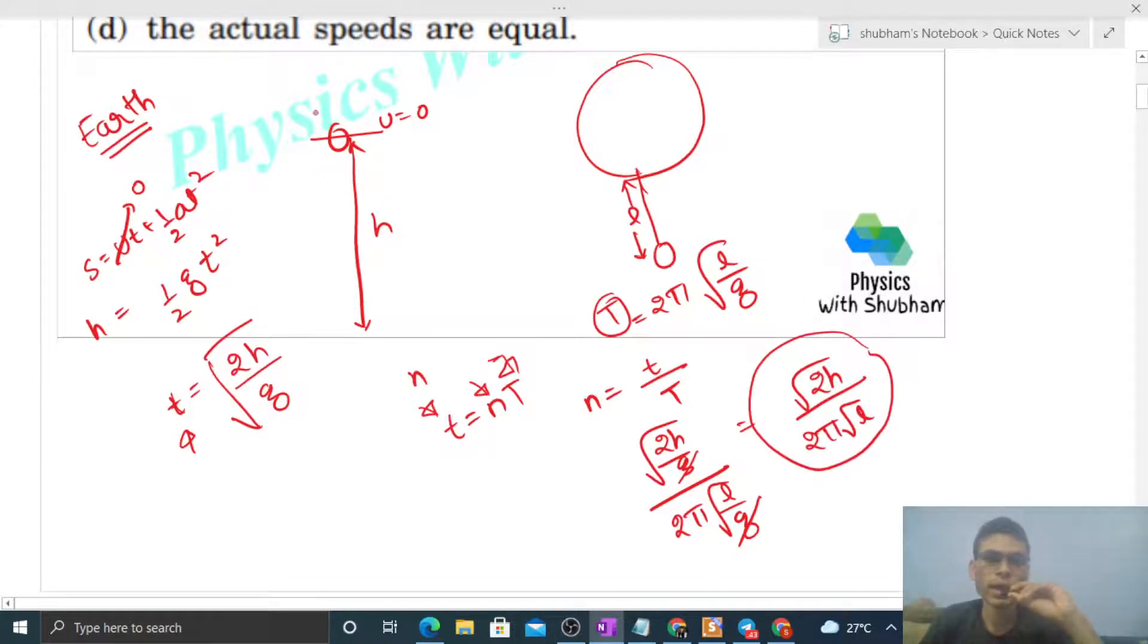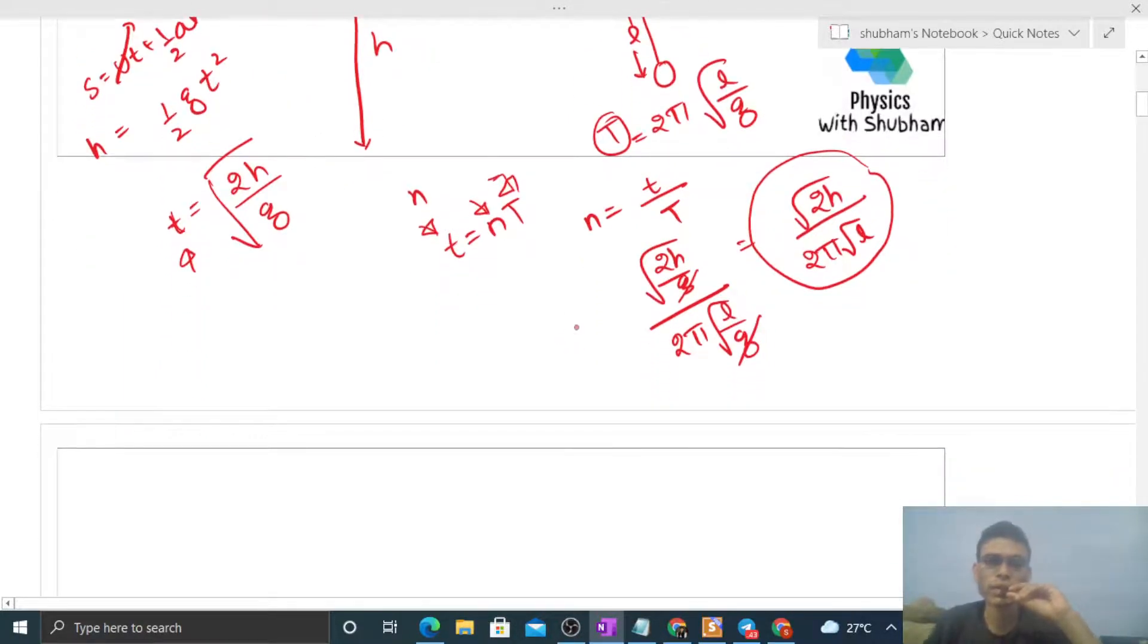Now agar hum yeh pura apparatus utha kar moon pe le jate hai, then aap yeh dhekho ki jo n number of oscillation hai woh change nahi hoga. Because yeh jo h hai, kitni height object niche jayega, woh fix hai, that will be same moon pe bhi same rahega. Similarly, length of the pendulum woh bhi same rahega. It means number of oscillations jo honge woh bhi same hoga.